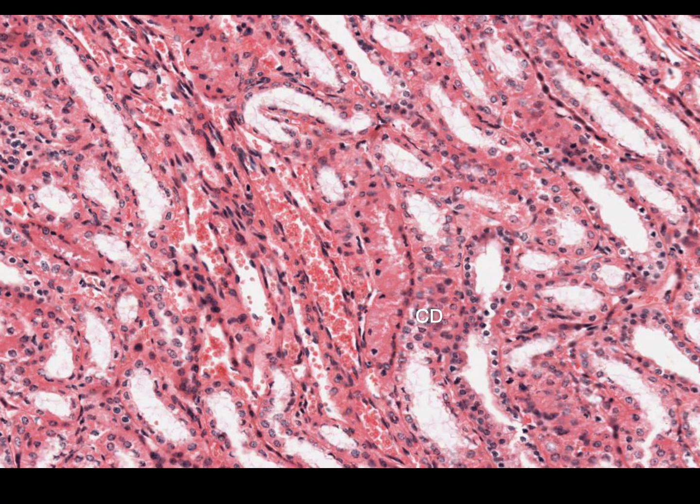Here we have there's a collecting duct and then right next to a thick ascending limb, right next to the vasa recta, and that little interstitium is in between. Those are the players that we see. I don't see a really good example of a descending thin limb here, but I can definitely see those.